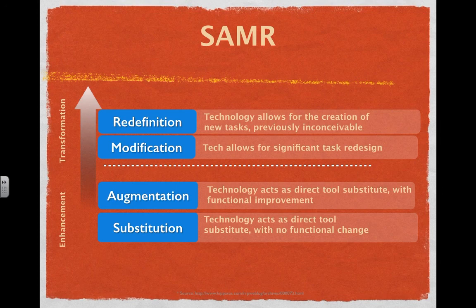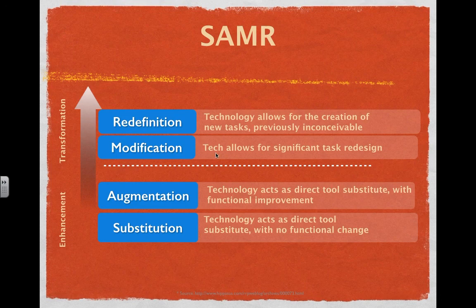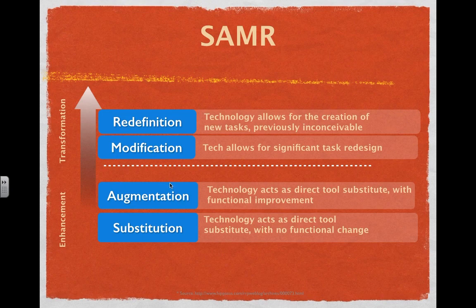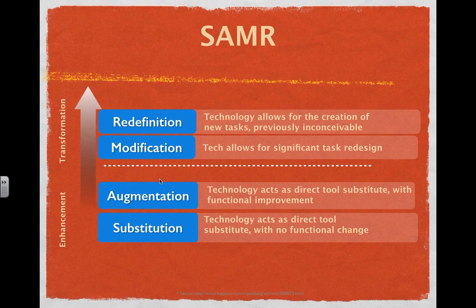That is redefinition, and that is the SAMR model in a nutshell. Remember, the key with all of this is growth. None of these places are bad places to be, but as we grow in our understanding of technology, our aim needs to be thinking about how we can modify instructional practices to take full advantage of the technology — to allow students to engage more deeply, be more creative and collaborative, and bear the brunt of the work of learning, which is what modification and redefinition are all about. None of these are places we can skip or should feel guilty about, because SAMR is about the growth model of technology adoption. Thank you so much for your time, and I hope this has clarified and introduced the concept of the SAMR model.